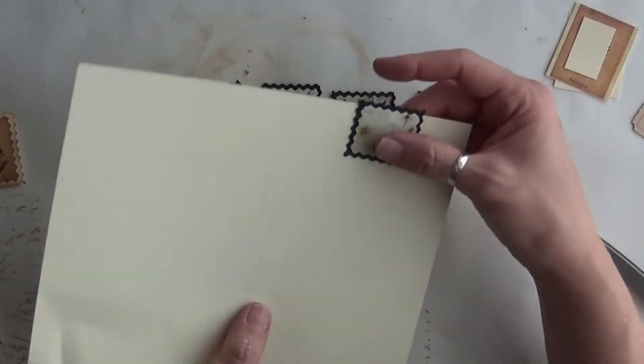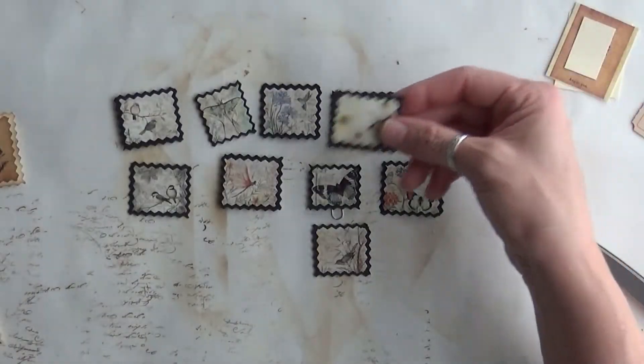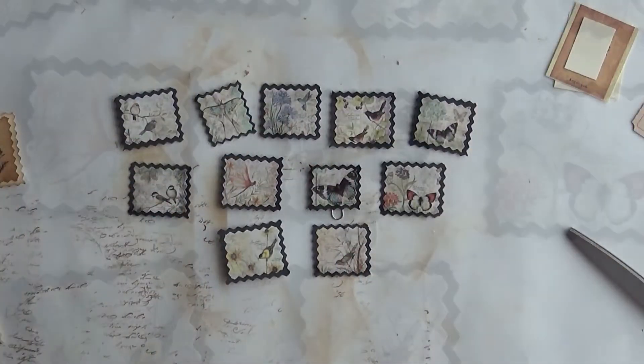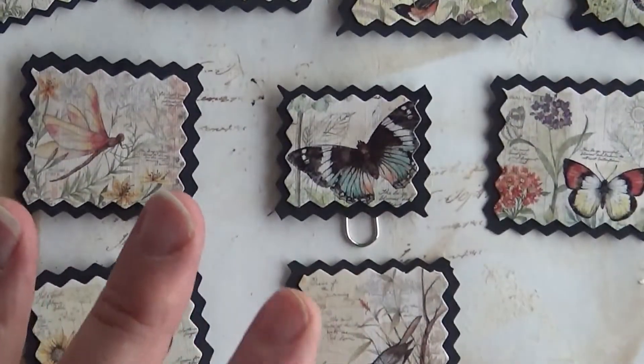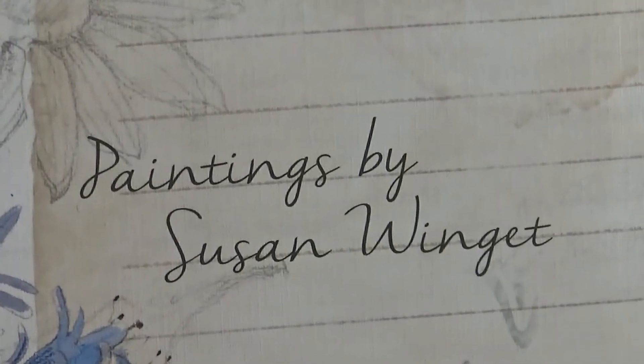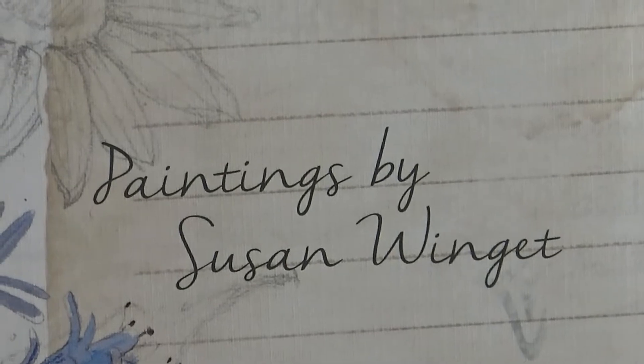These little images here are from this calendar called Field Guide 2019 Calendar, and the artist is Susan Wingate - I hope I'm pronouncing that right, but she does some really amazing watercolor art and I will show you that full picture after I show you these little beauties.